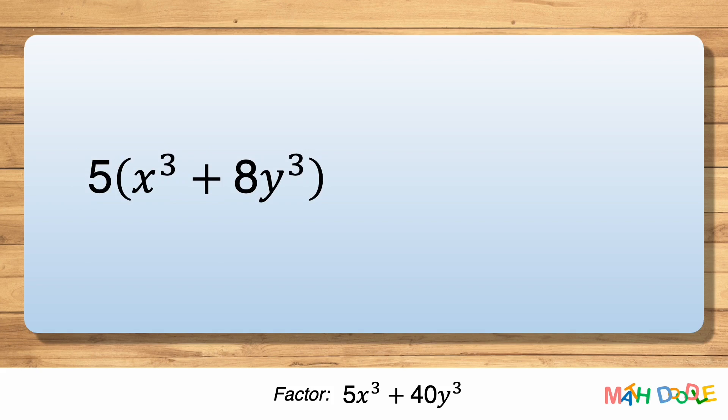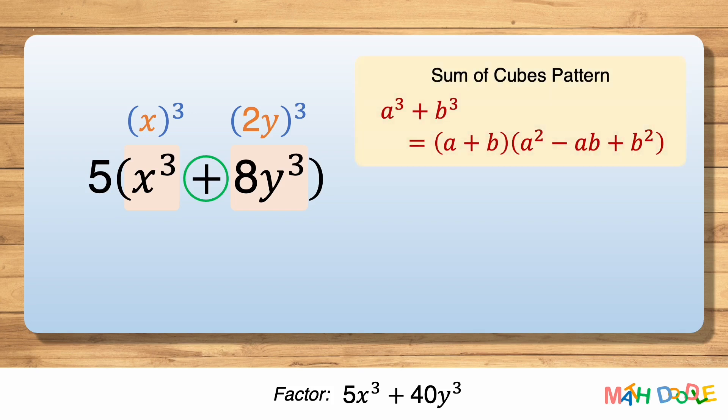Now let's look at the first and last terms of the binomial. They are perfect cubes, so the first term can be written as x cubed and the last term can be written as 2y cubed. Also, this binomial is the sum of the two perfect cubes. This means that we can use the sum of cubes pattern, and the binomial can be factored into the form of a plus b times a squared minus ab plus b squared.